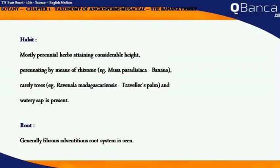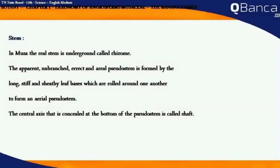Root: Generally, a fibrous adventitious root system is seen. Stem: In Musa, the real stem is underground, called rhizome. The apparent unbranched, erect and aerial pseudostem is formed by long, stiff and sheathy leaf bases which are rolled around one another to form an aerial pseudostem. The central axis concealed at the bottom of the pseudostem is called the shaft.